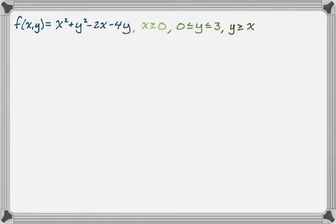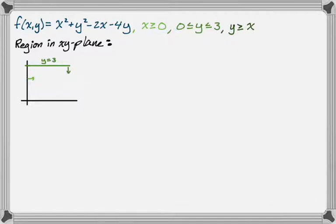So here's our function, x² + y² - 2x - 4y. We know that x ≥ 0, y is between 0 and 3, and y ≥ x. So what I'm going to do is look at this in the x, y plane. So x ≥ 0, so I'm just going to put a little arrow to indicate that I'm going to the right there. So y is between 0 and 3. Here's y = 3, 0 is the x-axis. Between them means I can go down, or I could go up from the x-axis.